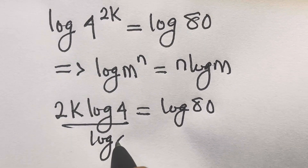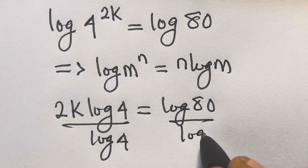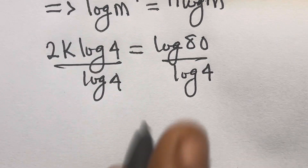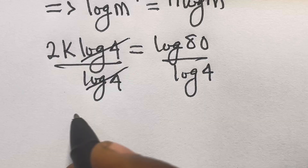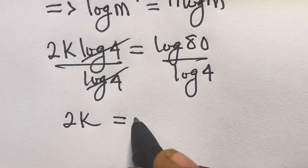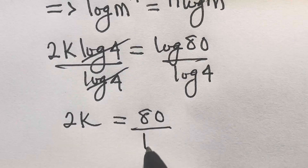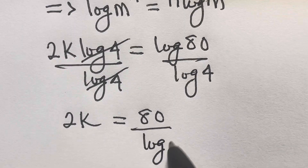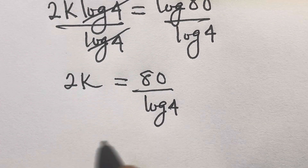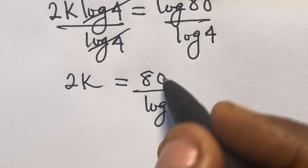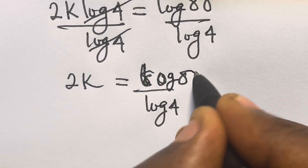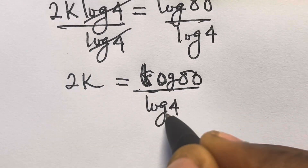Applying this rule, we will have 2k·log 4 equals log 80. Here we can divide both sides by log 4. We cancel log 4, so we have 2k equals log 80 divided by log 4.